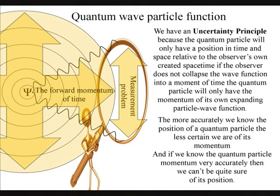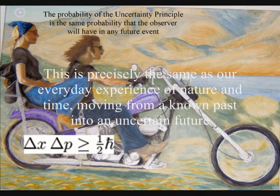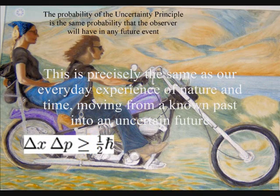The probability of the wave function only works forward in time. We can always calculate backwards and see the position and momentum of a quantum particle in the past. This is precisely the same as our everyday experience of nature and time, moving from an unknown past into an uncertain future.